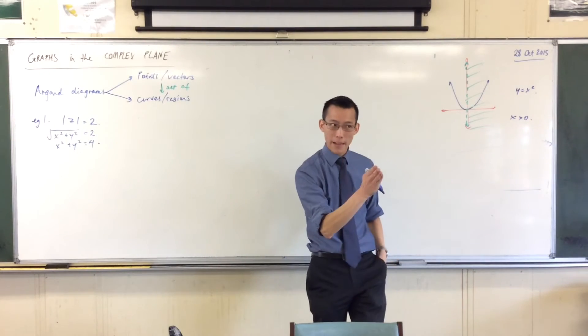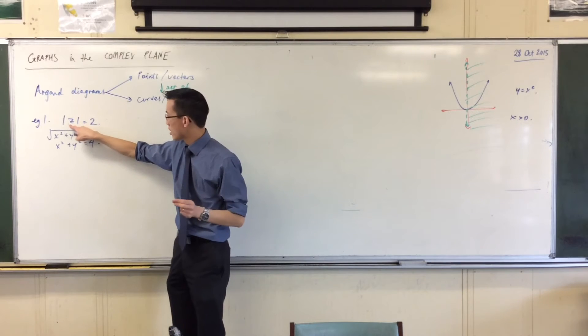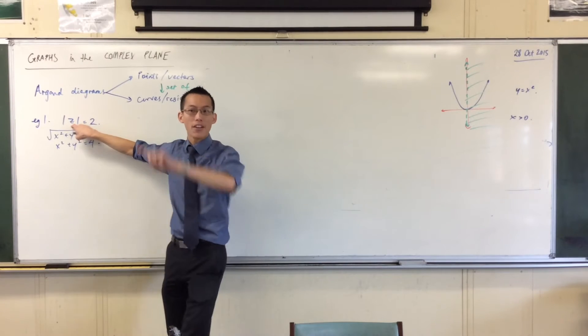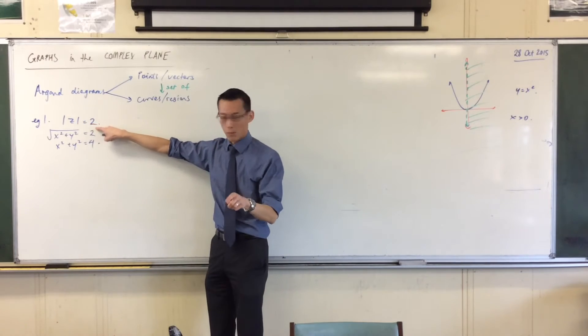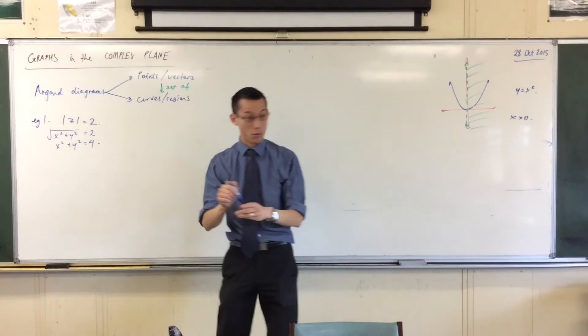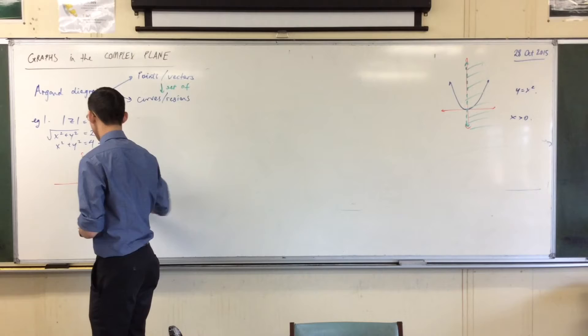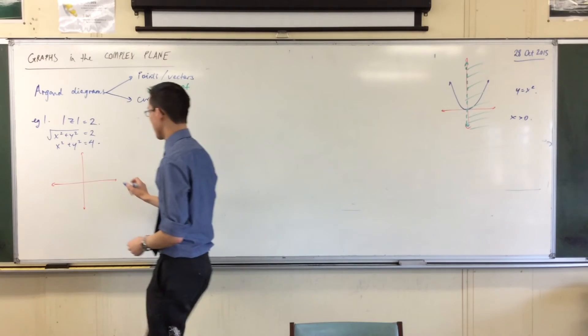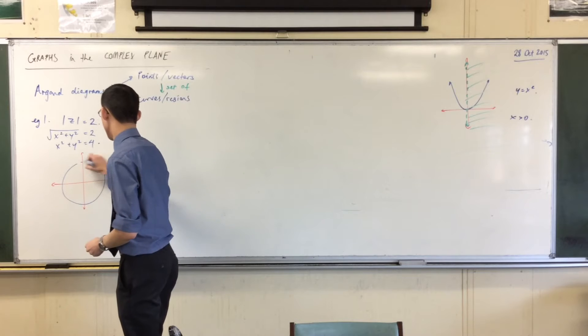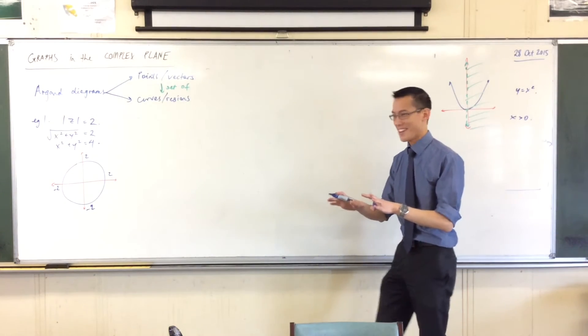Which of course we ought to have expected because, what does this mean geometrically? This means our distance from the origin. I want that whole set of points whose distance from the origin is 2, which of course is this circle. So let's just quickly draw it. It's just a simple one to begin.